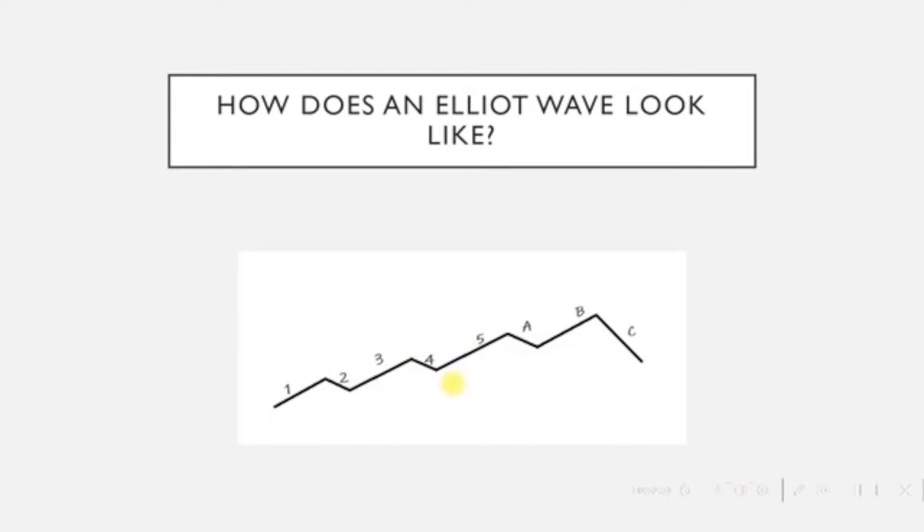After the first five waves—1, 2, 3, 4, and 5—comes the A, B, C wave. In the A, B, C wave, waves A and C are against trend, and B is along the trend. One complete wave cycle has bearish and bullish waves that make up two waves.